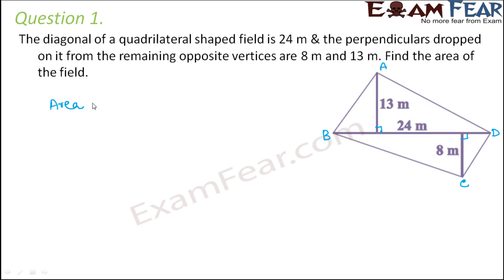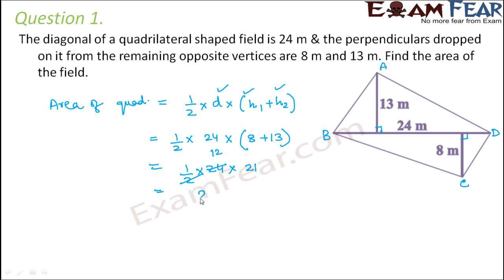Now we already know that the area of a general quadrilateral is given as half into diagonal into sum of the perpendiculars dropped on the diagonal and all these three values are already given in this problem. So this would be half into diagonal which is 24 meters into H1 and H2 which is 8 and 13 respectively. So this would be half into 24 into 21. So this is 12. So 12 into 21 is 252 meters squared. So this is the area.